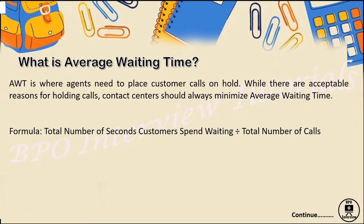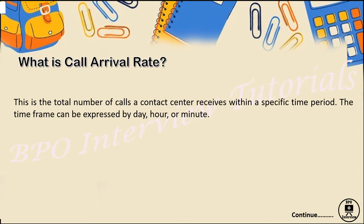The agent needs to place the customer call on hold. While there are acceptable reasons for holding a call, contact centers should always minimize average waiting time, because reducing it increases customer satisfaction — the customer feels they are getting a solution as soon as possible. The formula is simple: total number of seconds customers spend waiting divided by total number of calls. If you have any questions, please write in the comments.